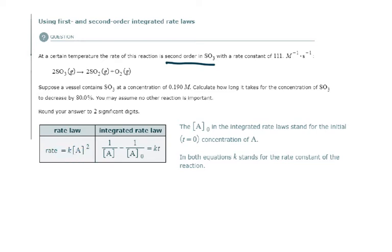And so what we're trying to find now is time. How long does it take for the concentration of SO₃ to decrease by 80 percent? That's the only thing different here. Let's write down what we are given as far as initial concentrations and K. So we are given a rate constant here.